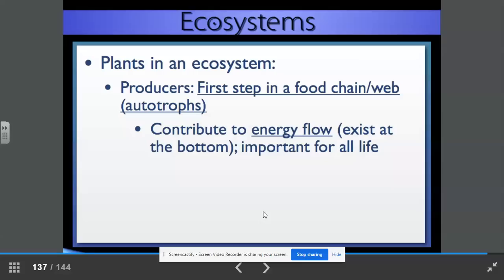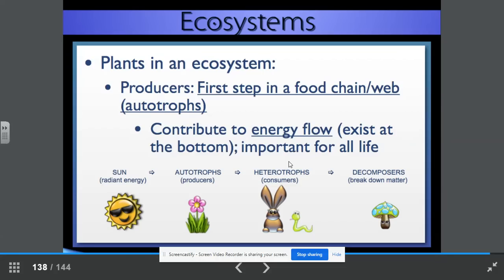Plants in an ecosystem, they are known as producers. They are the first step in a food chain or food web. We call them autotrophs. They make their own food. They contribute to the energy flow and they exist at the bottom. They are extremely important for all life. So we take energy from the sun. The autotrophs take that energy. Through photosynthesis, are able to produce and give off glucose, produce glucose and oxygen.